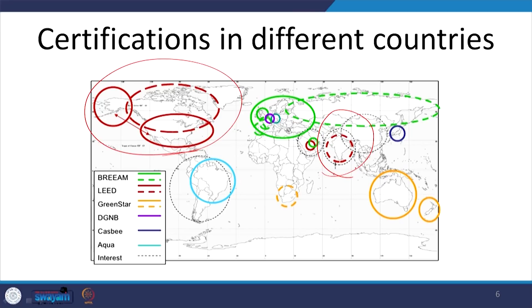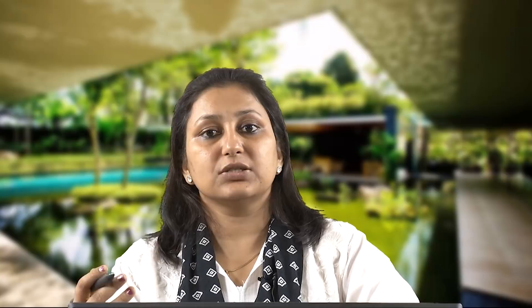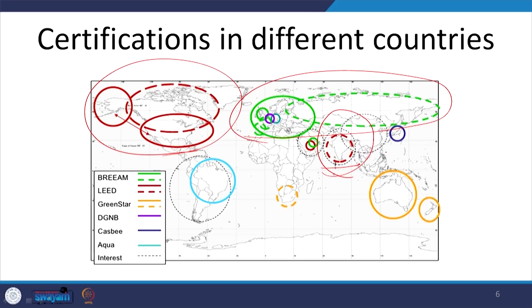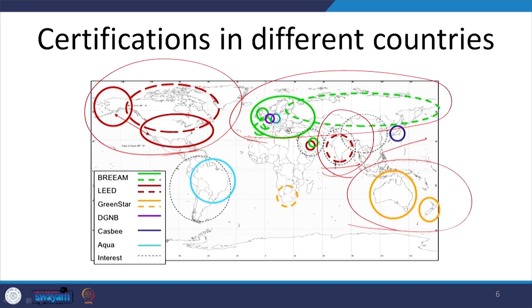For example, IGBC in India initially started on the same lines as USGBC and LEED, which is why it is shown in red as being derived from LEED. There is also a large area under the influence of BREEAM, CASBEE, and Green Star, which predominantly works in Australia and New Zealand. Almost the entire world is going ahead with this green building movement and almost all countries now have their own green building councils and rating programs.